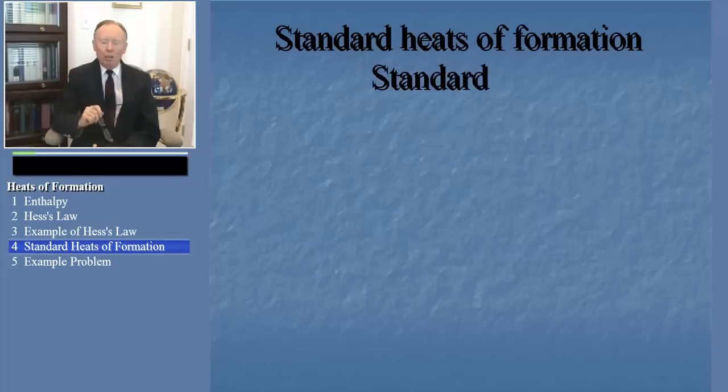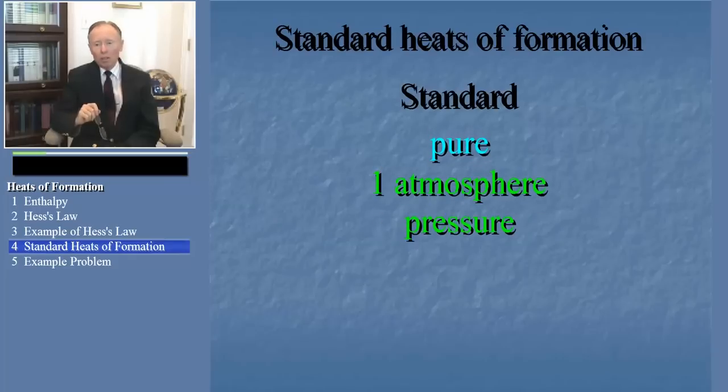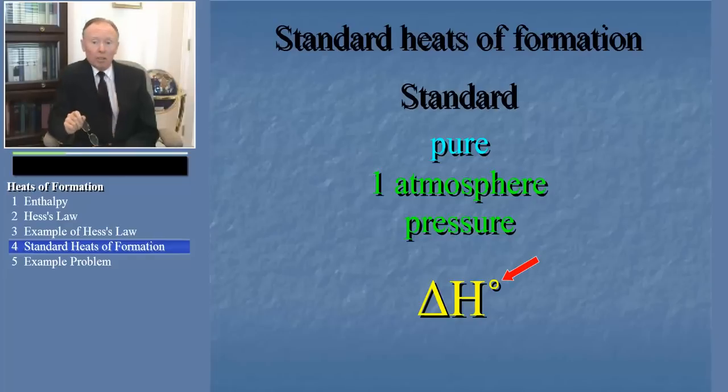First, the word standard. We say a heat is standard when all the reactants and products are pure and at one atmosphere pressure. A standard heat or enthalpy change for a reaction is expressed as delta H0. That fine-looking superscript, little zero, is pronounced naught and represents the standard nature of this delta H. So, delta H0 is the standard enthalpy change for a reaction.